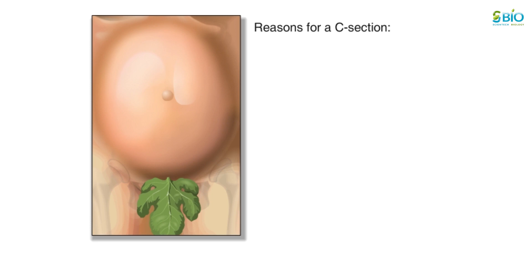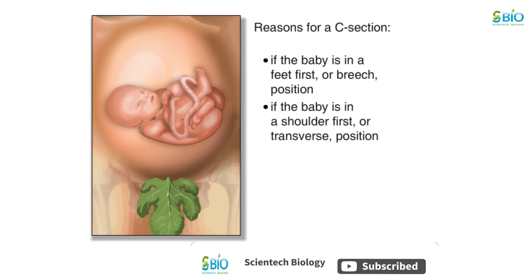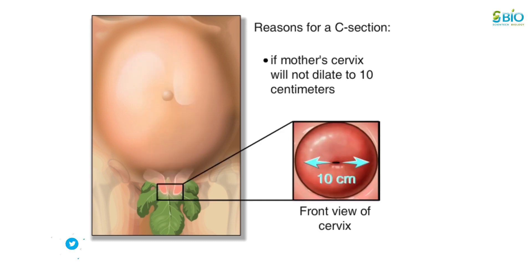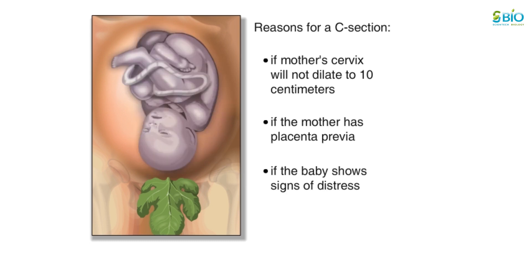Some of the most common reasons for a caesarean are: if the baby is in a feet-first breech position, if the baby is in a shoulder-first transverse position, if the baby's head is too large to fit through the birth canal, or if labor is prolonged and the mother's cervix will not dilate to 10 cm. Another reason is if the mother has placenta previa, where the placenta is blocking the birth canal.